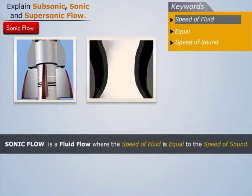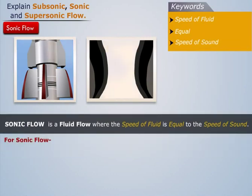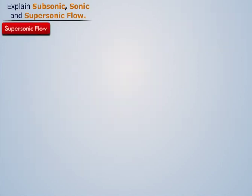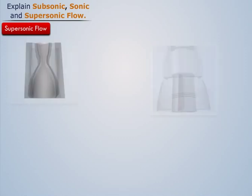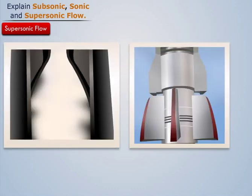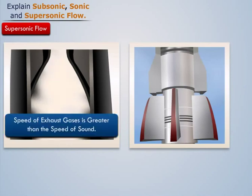For sonic flow, the value of Mach number is equal to one. Now let us understand supersonic flow. When the exhaust gases flow through the divergent section, their speed further increases and becomes greater than the speed of sound. This flow of exhaust gases through the divergent section is said to be supersonic.